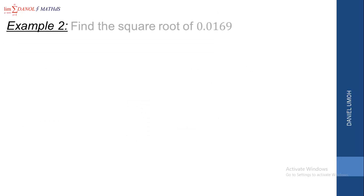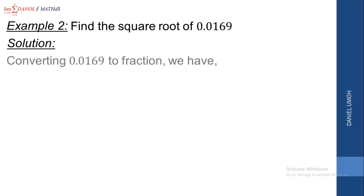Example 2: find the square root of 0.0169. We are going to convert that to a fraction. Looking at 0.0169, you can see that it is to four decimal places, so we are going to divide by 10,000. That gives us 169 over 10,000. If you check this with your calculator, 169 over 10,000 gives you 0.0169 — so it is the same thing.